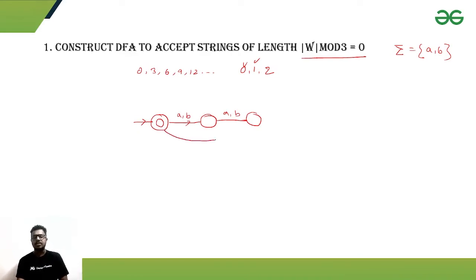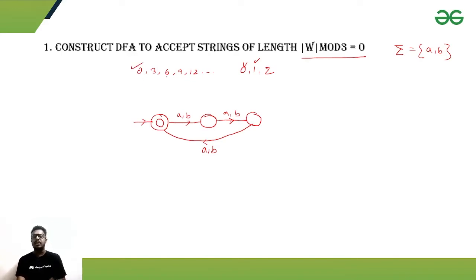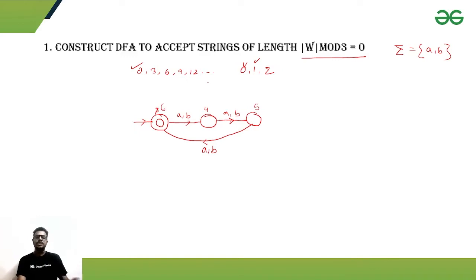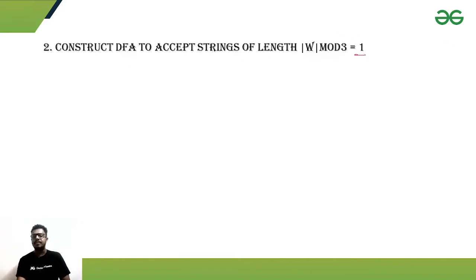Finally, when we get a length-3 string, upon receiving another symbol it should be accepted. This DFA accepts lengths 0, 3, 6, 9, 12 — upon reaching length 3, getting more symbols cycles back: length 4, then 5, then back to an accepting state at length 6. All lengths divisible by 3 are accepted at the initial state.